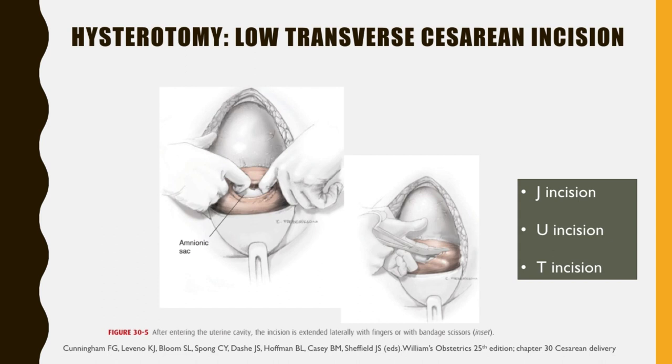Comparing blunt and sharp extensions of the initial uterine incision: sharp extension is associated with increased estimated blood loss, but post-op hematocrit changes, need for transfusion, and infection rates are not different. The uterine incision should be large enough to allow delivery of the head and trunk without tearing or cutting the uterine vessels along the lateral uterine margins. If the placenta is encountered in the incision line, it must be either detached or incised. When the placenta is incised, fetal hemorrhage may be severe, and delivery and cord clamping should be performed as soon as possible.